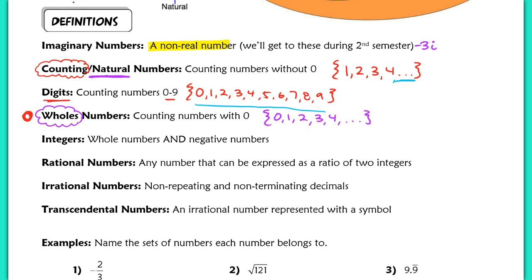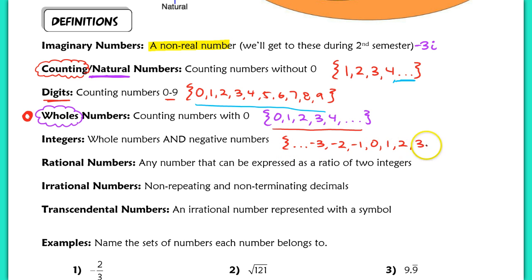Next, we have integers. Integers are all of the whole numbers but also negative numbers — so negative 3, negative 2, negative 1, 0, 1, 2, 3, and so on. I think of it this way: at some point farmers needed a way to say 'you owe me 3 cows,' and that's how we came up with negative numbers.